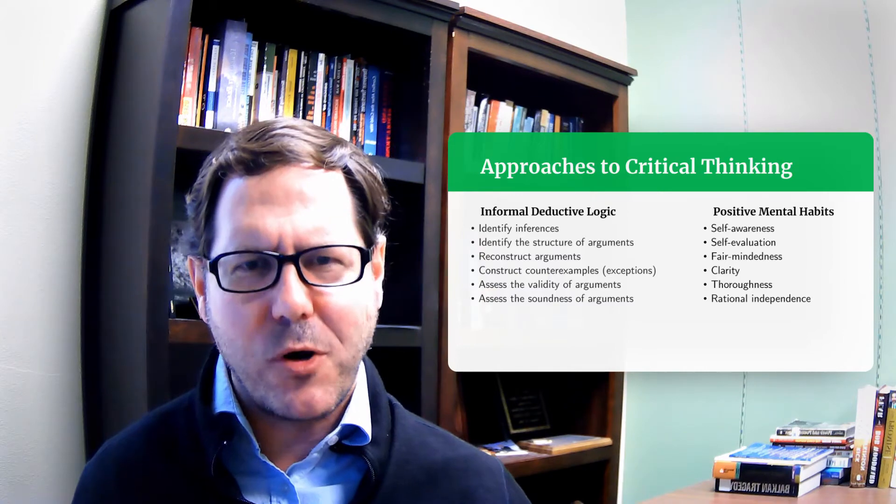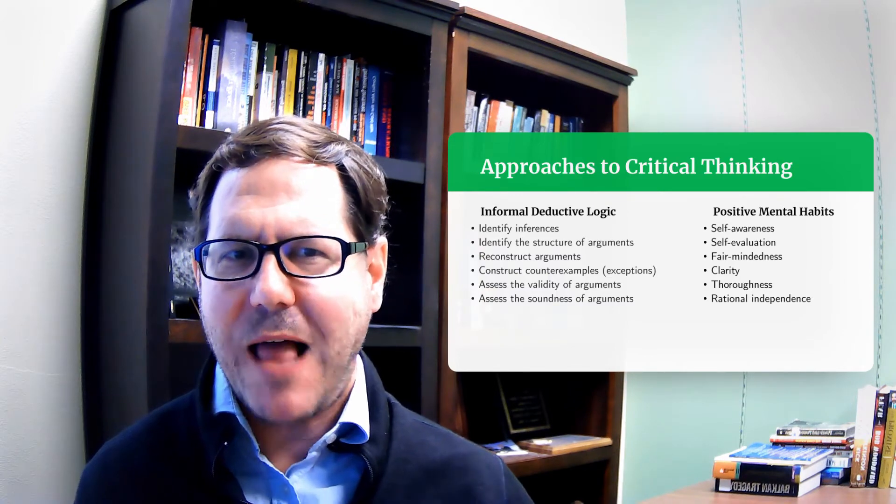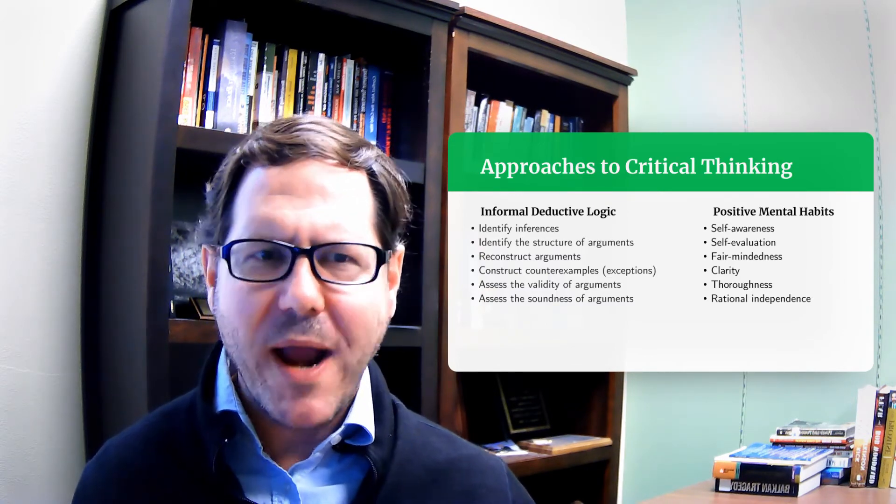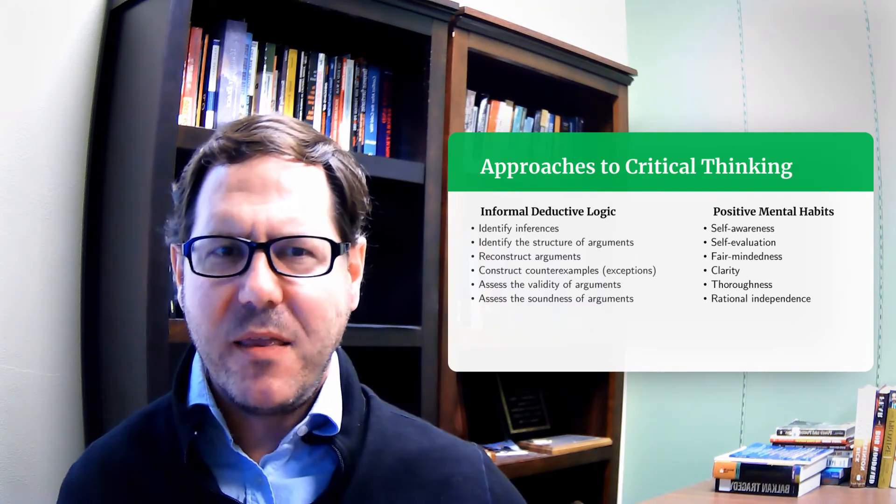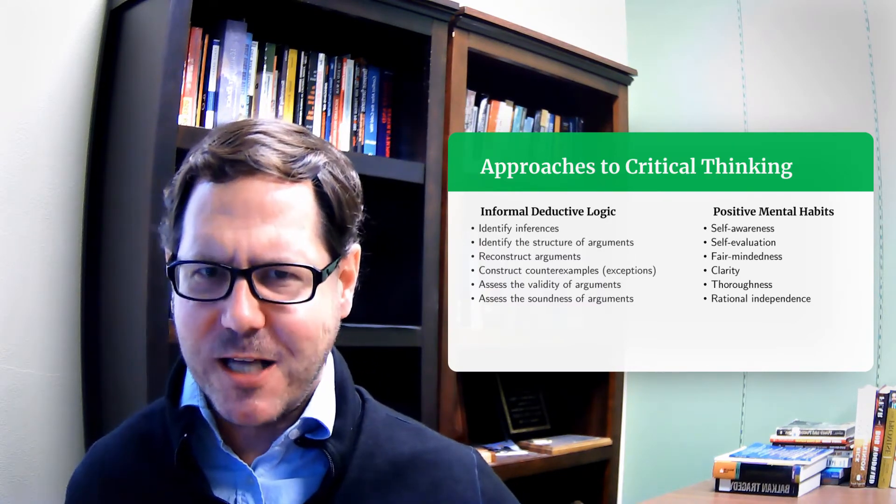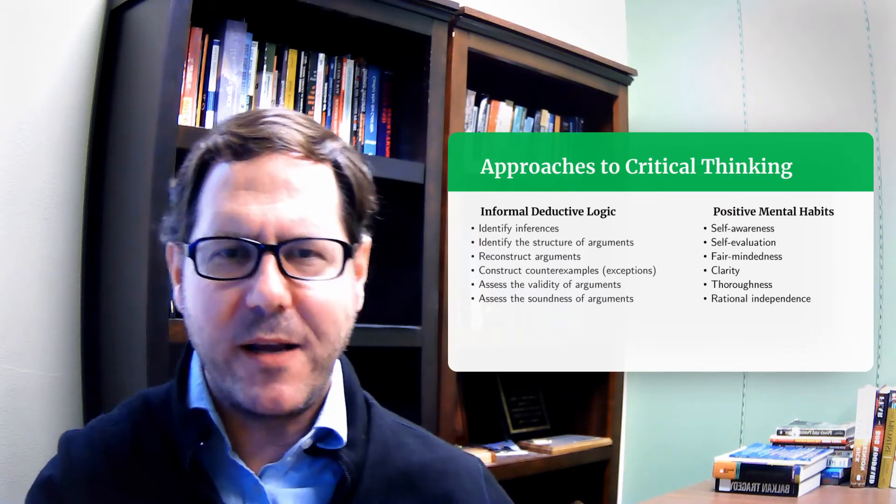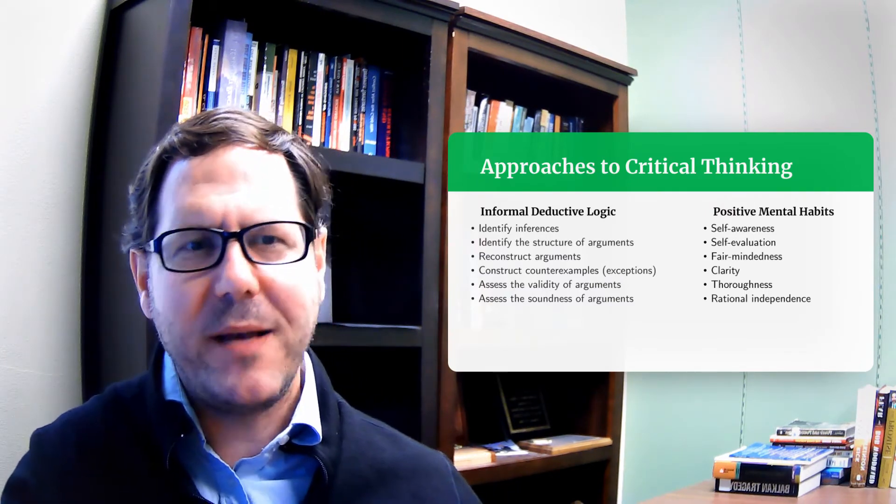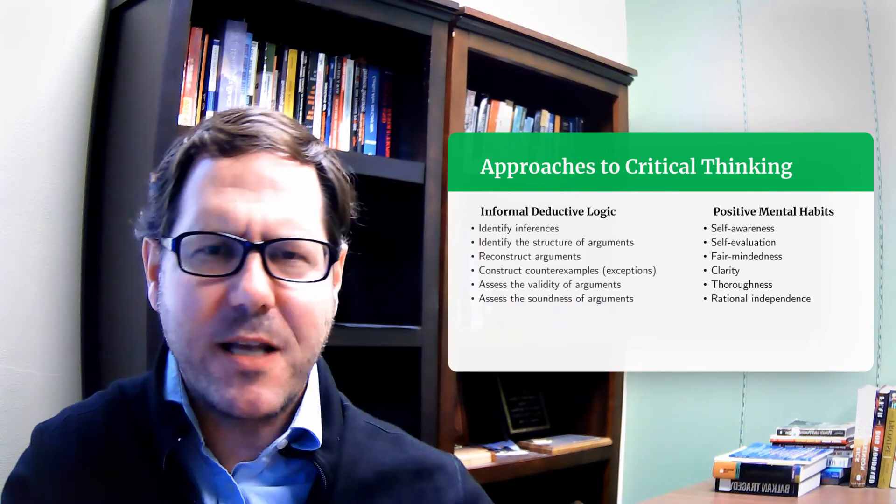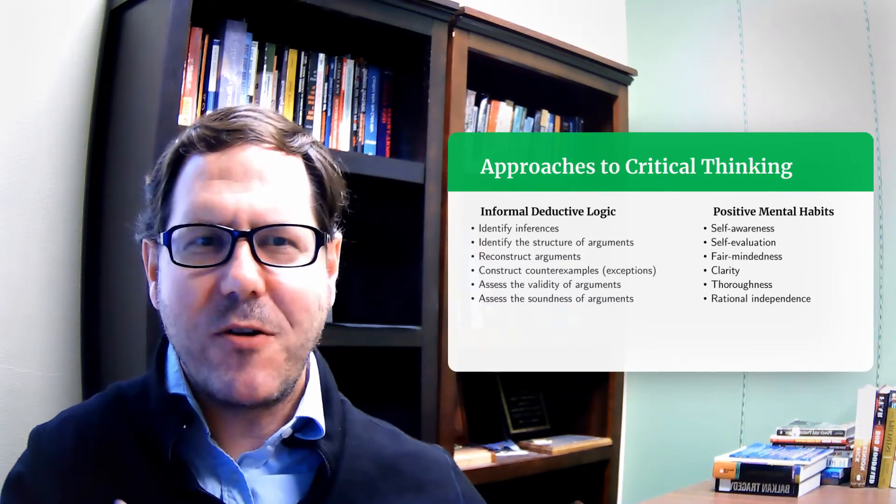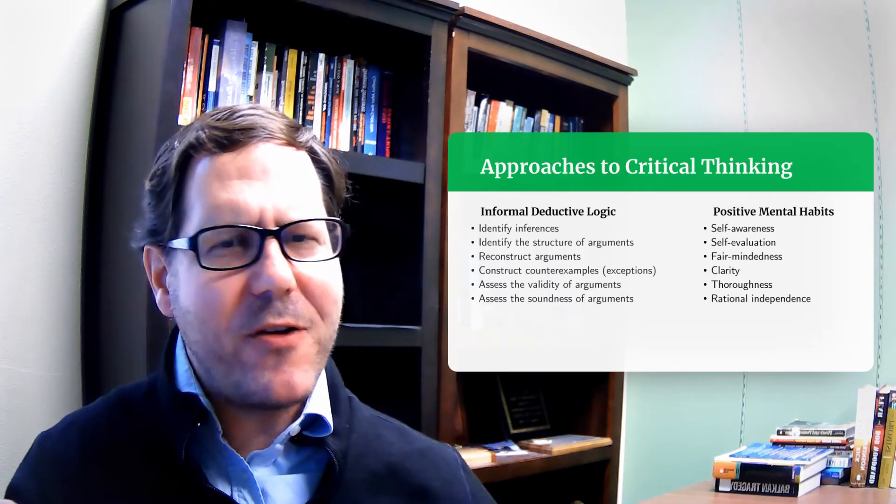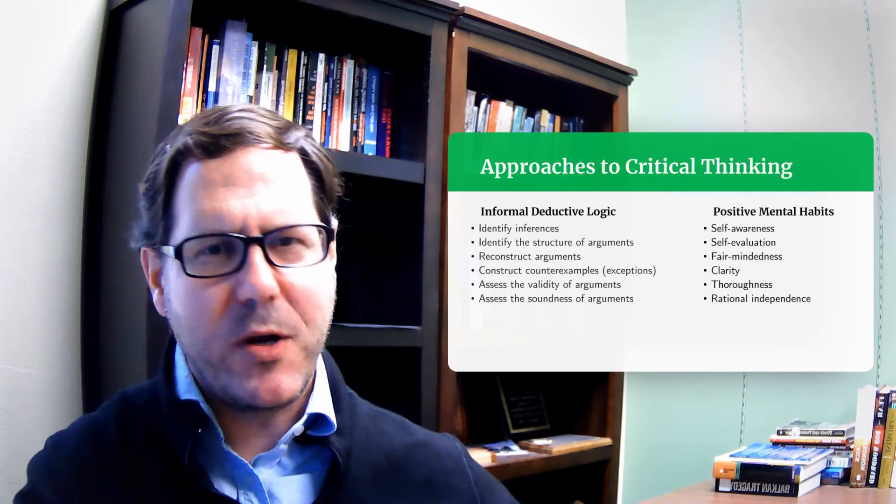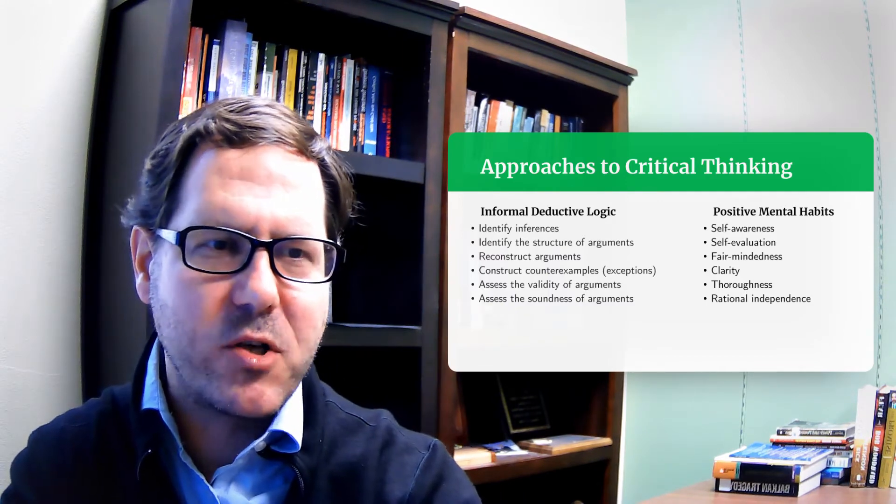The second approach that gets taken is these positive mental habits, that you should be self-aware, that you should be reflective, that you should understand that we as human beings have bias, that we should try to separate ourselves out from the problem so we can bring a level of objectivity to it, that we should be fair and balanced in our reasoning process. All these are mental things that we as an individual bring to the table. They're not things or steps that we would go through to build a rigorous argument.